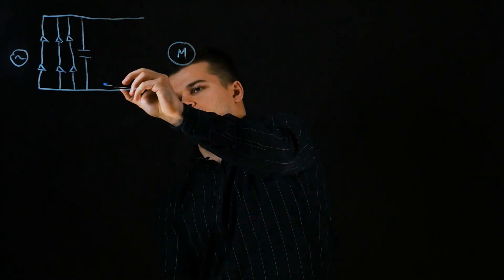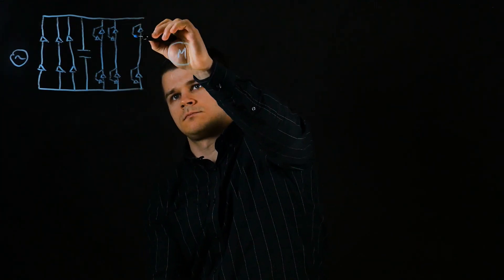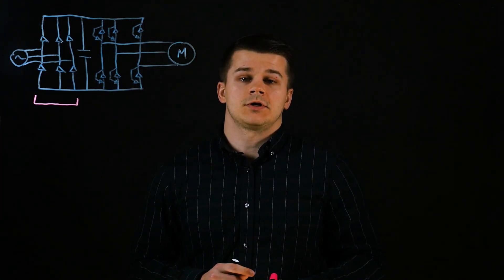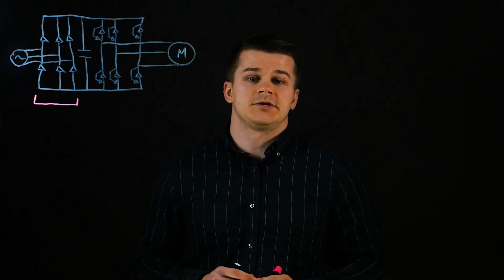Now you may remember from our pulse width modulation video that the power stage consists of three components. The first are the AC input rectifiers. These convert your AC line voltage to a DC bus voltage.